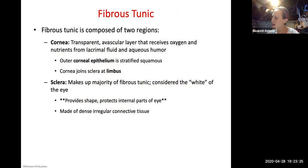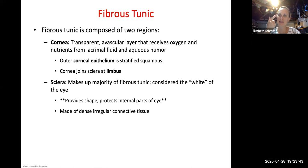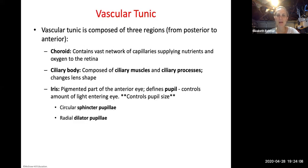The fibrous tunic is the outermost layer, made of the sclera and cornea. The cornea is transparent and avascular — it receives oxygen and nutrients from lacrimal fluid. The sclera is the white part of the eye; it provides shape and protects the internal structures. It's made of dense irregular connective tissue.